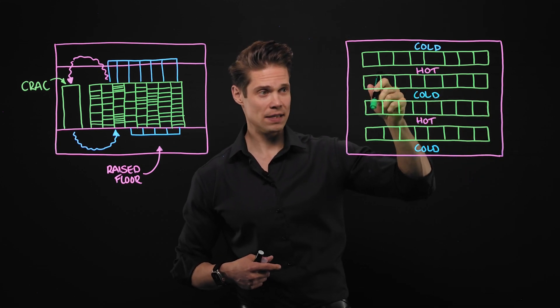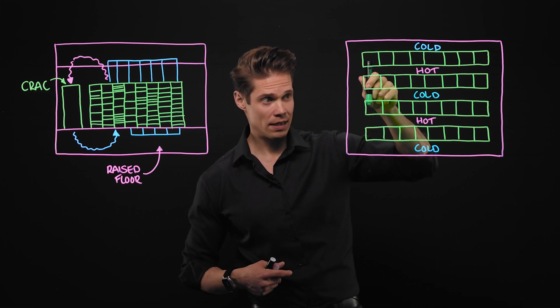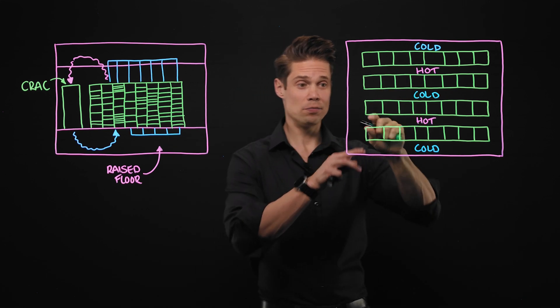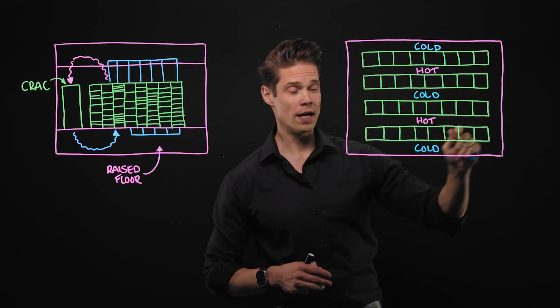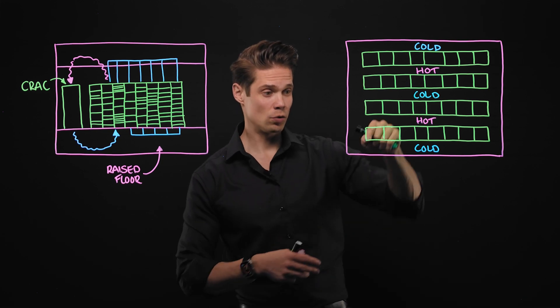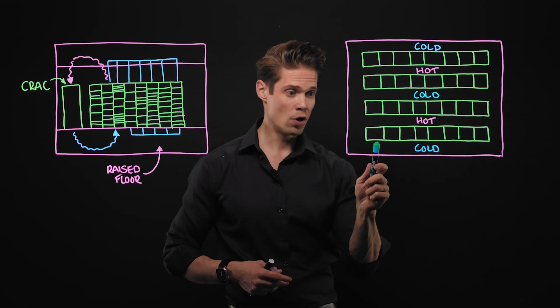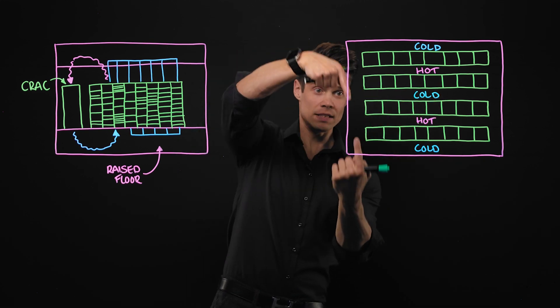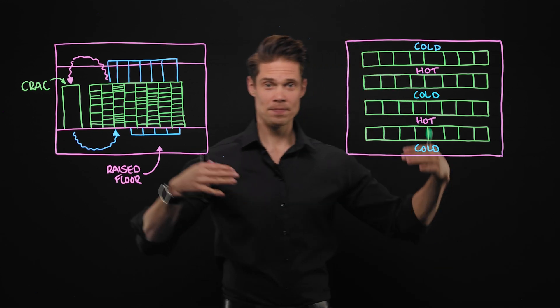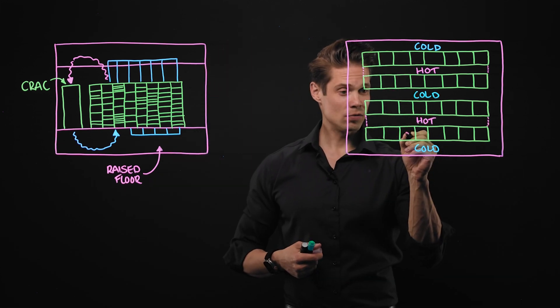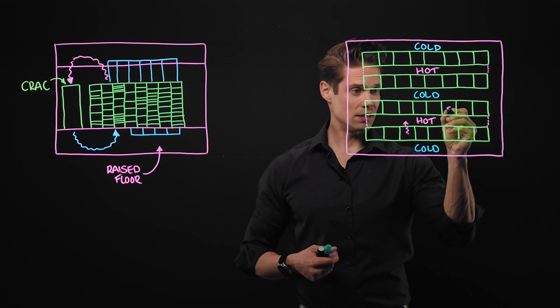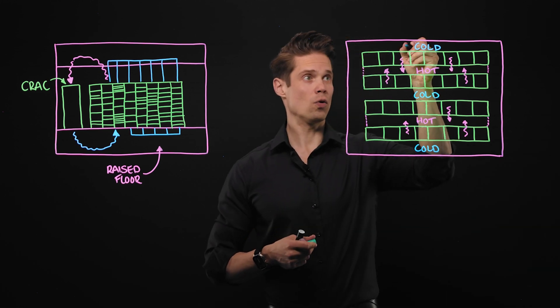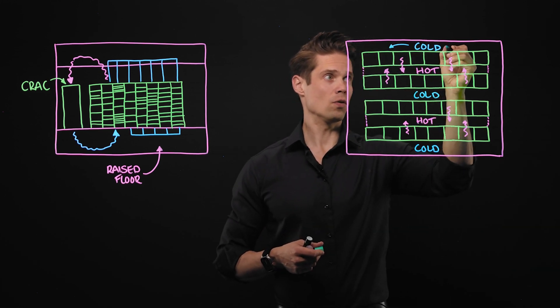So the hot air comes out from the back. So if we want this to be a hot aisle, then this row has to be facing the other way. So the front of the servers of this row would be here and the back on this side. So both of these rows are blowing their hot air on one aisle. The hot air comes out from these devices. And then the cold air comes out from the cold aisles.